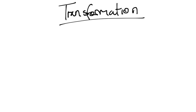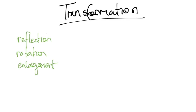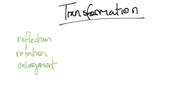Let's look at transformation. CXE has transformation in a few categories: there's reflection, rotation, and enlargement — those are the basics coming along from Form 1. In reflection you need to know the axis of reflection. In rotation you need to know the center point. In enlargement you need to know the scale factor. You need to understand those things to be able to do them properly.